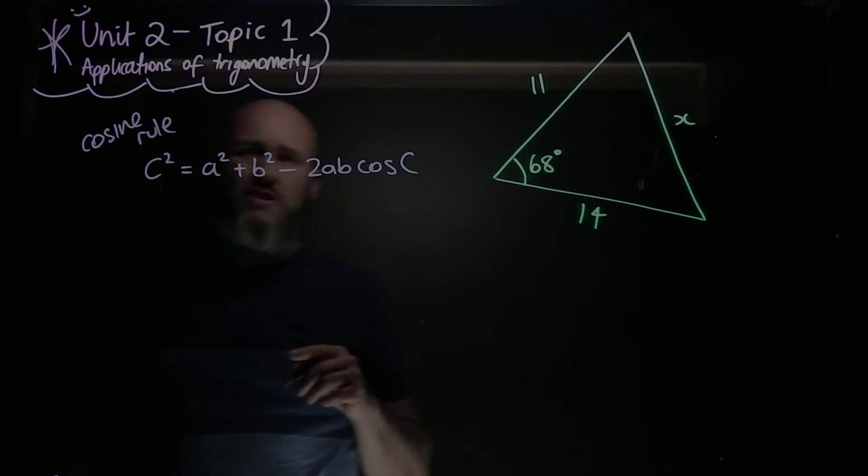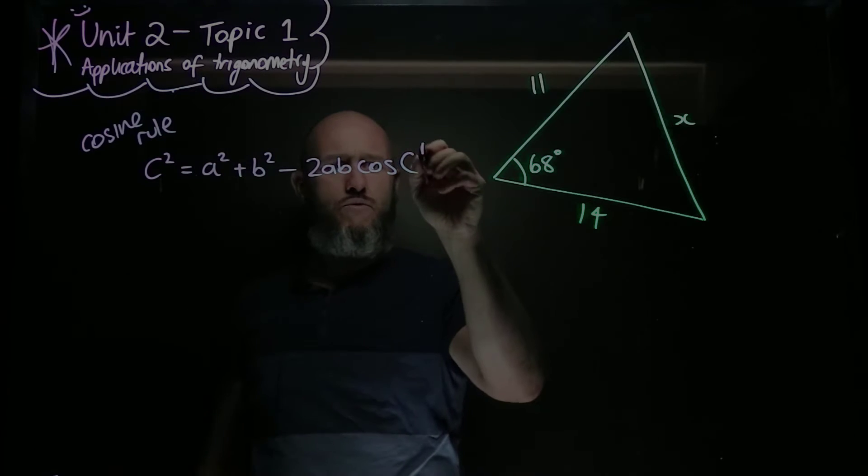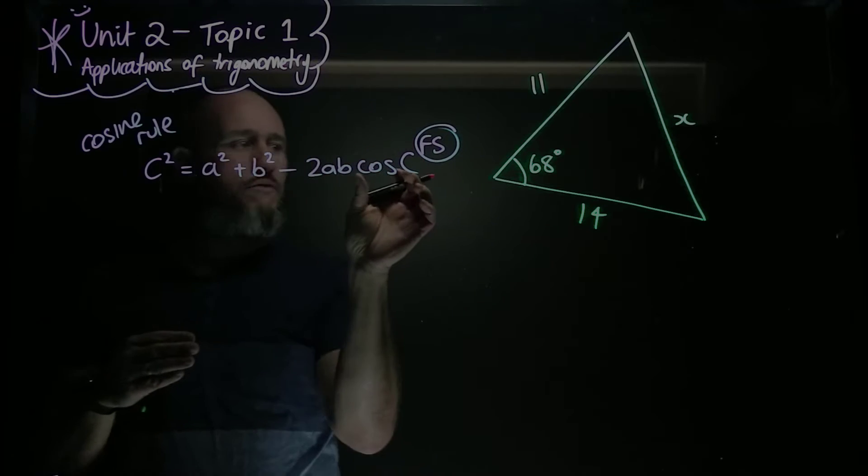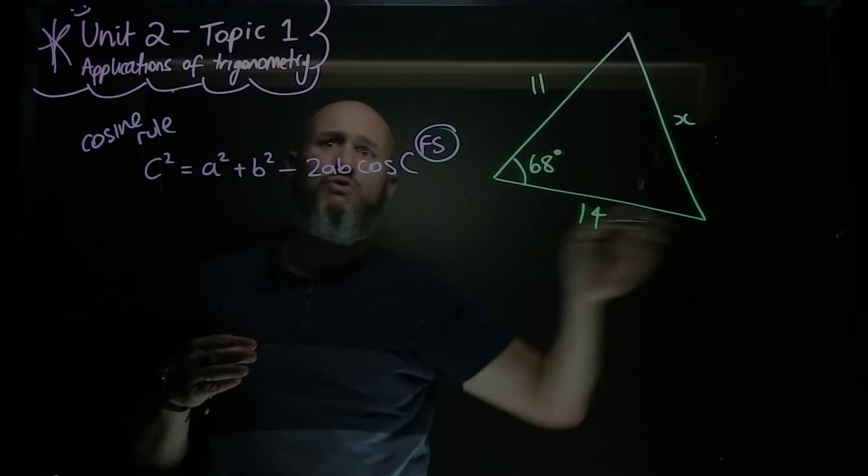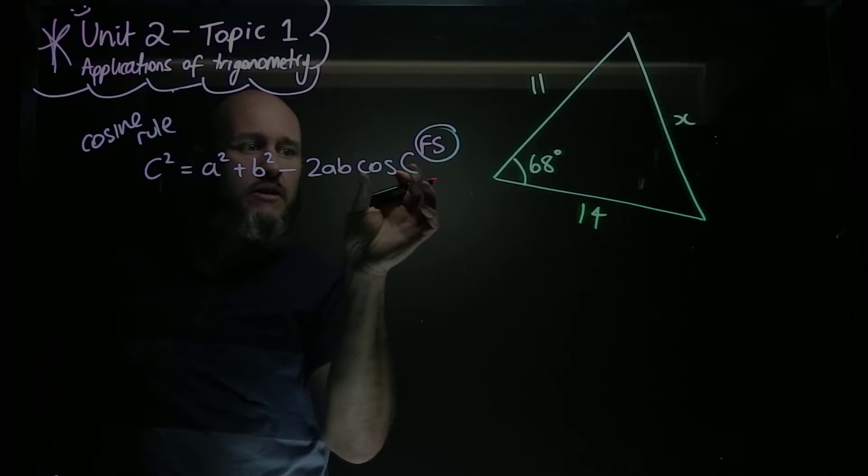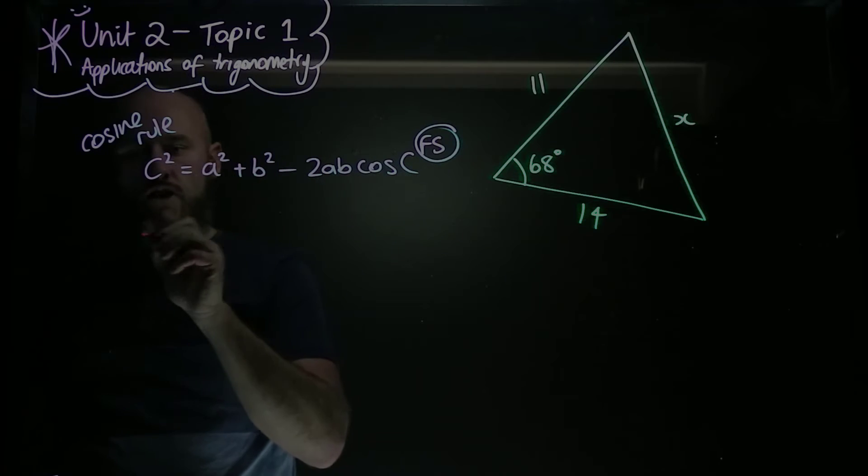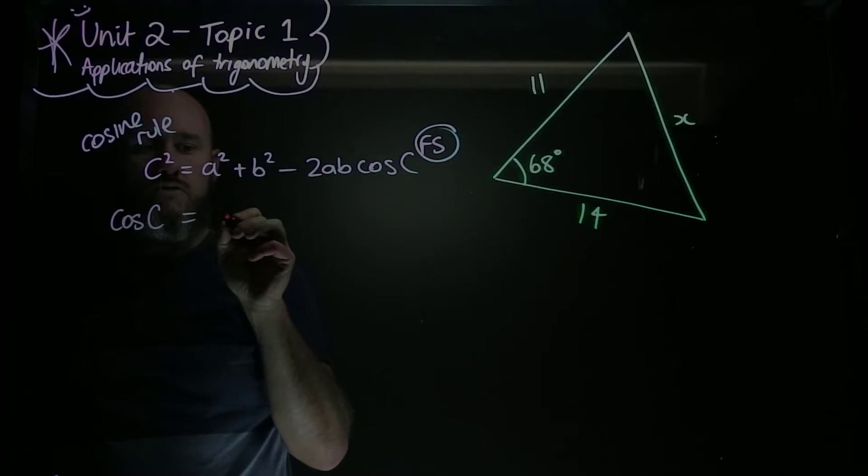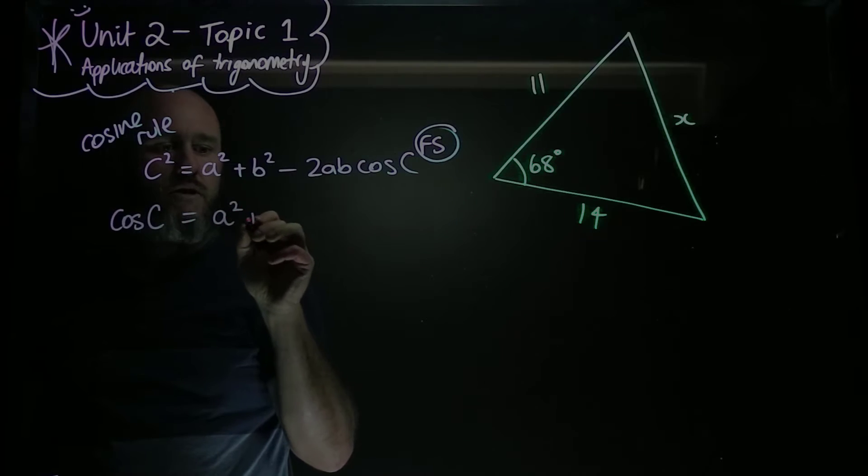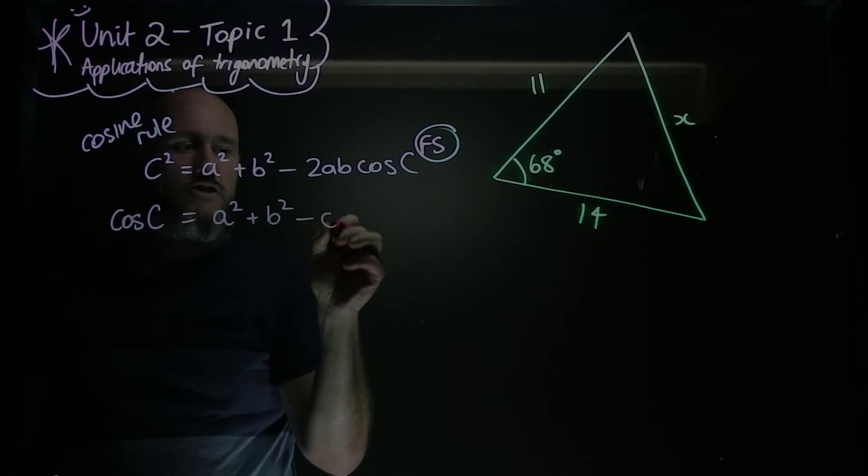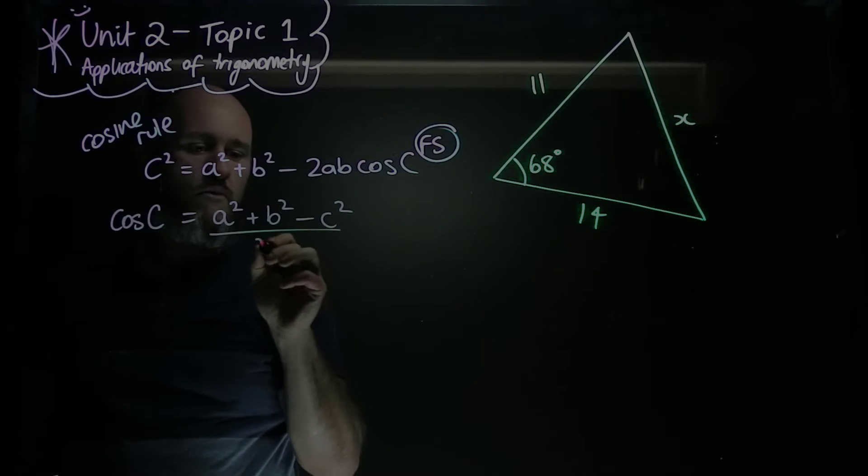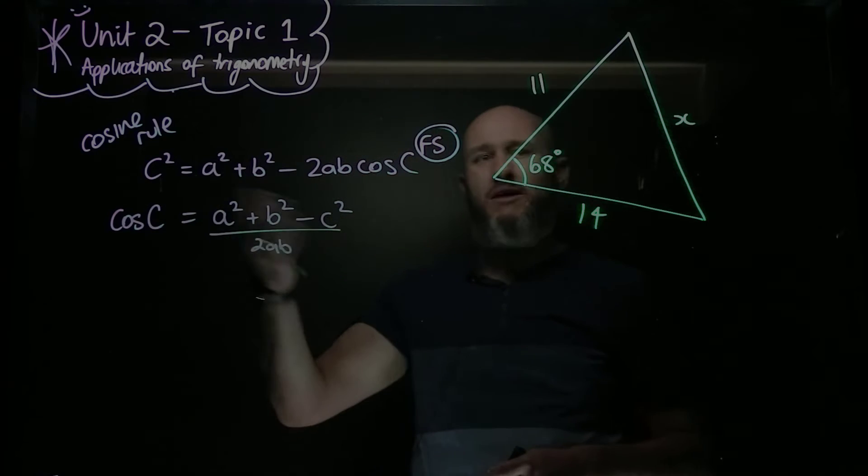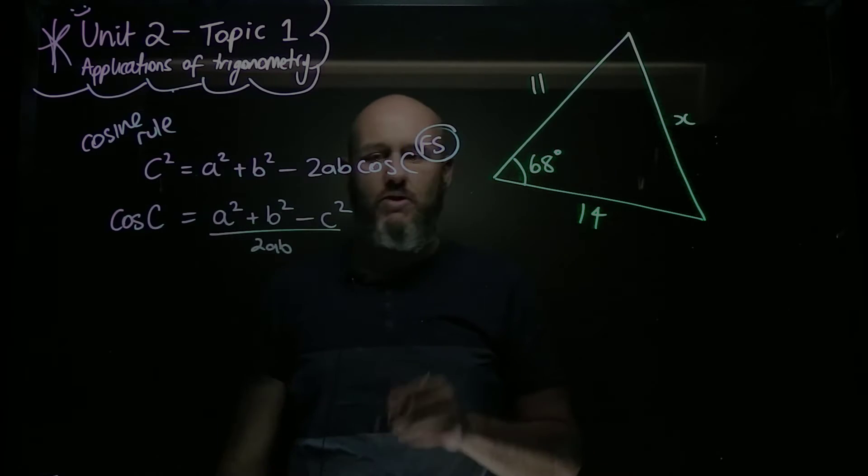The other variation is where it gets rearranged. This one's on the formula sheet, and the other one's not on the formula sheet. But sometimes you also want to find an angle given you know all three sides. So I can take that cos C, rearrange for cos C, and I get cos C is equal to a squared plus b squared minus c squared all over 2ab. It's not on the formula sheet, but you could certainly substitute a, b, and c in and rearrange. So it's not too hard.